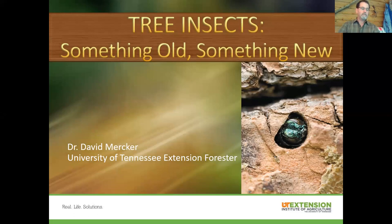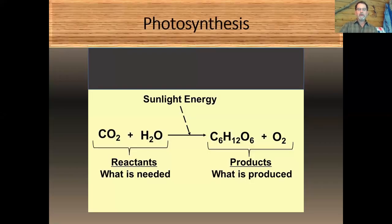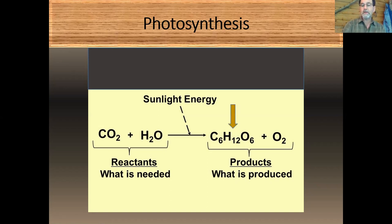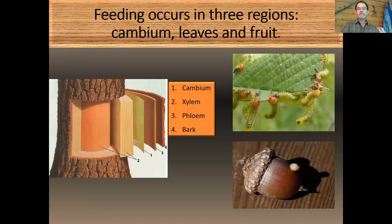Tree insects — something old, something new, and maybe before it's over with, something borrowed and something blue. It might seem a little bit odd that I would begin with a chemical equation — photosynthesis. I've addressed this topic in prior Back Porch Forestry sessions, but it's very critical to today's topic. When we consider photosynthesis, we look at the reactants: carbon dioxide and water, in the presence of sunlight, produce oxygen that we breathe and a carbohydrate molecule, C6H12O6. This molecule really is what fuels the entire earth. Our bodies rely on the carbohydrate molecule, and so do insects — that's largely what they're after when they're attacking our trees, and the feeding occurs in three different regions.